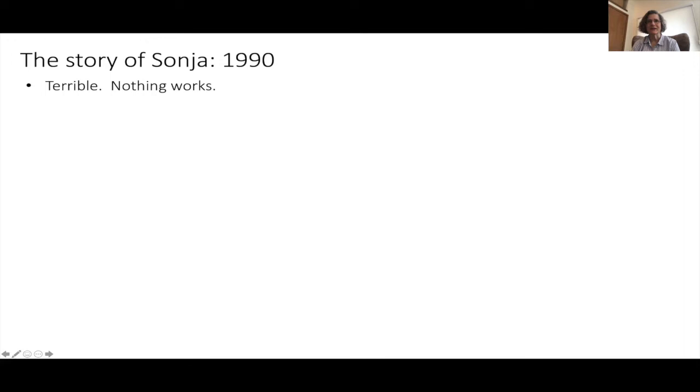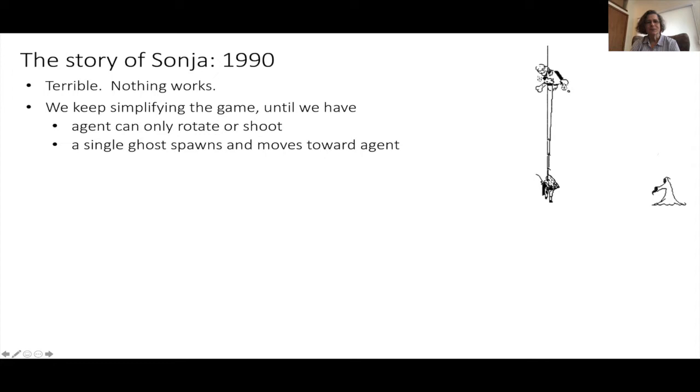Okay, so back to Sonja. We tried connecting Q learning to the video game, and it was a disaster. Nothing worked at all. We kept making the game simpler and simpler. We had it boiled down so the character just stayed in the middle of the screen, all it could do was rotate and shoot. These ghosts would appear on the horizon and move slowly toward the agent. There was a very clear optimal strategy: rotate until lined up with the ghost and then shoot. But it still didn't work.